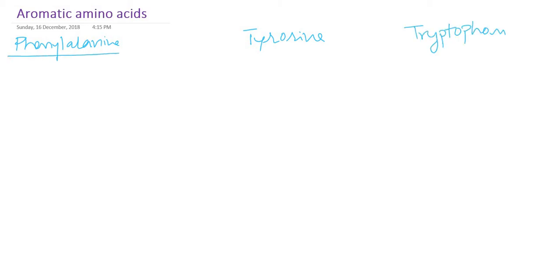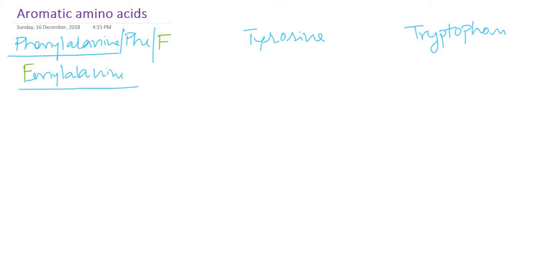The three-letter abbreviation for phenylalanine is P-H-E, the first three letters. But the single letter abbreviation is different — phenylalanine is F, not P. To remember this, you can pronounce phenylalanine as 'fenylalanine' in your mind, so that you can remember the single letter abbreviation F.